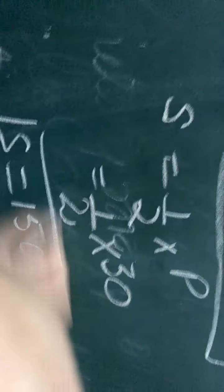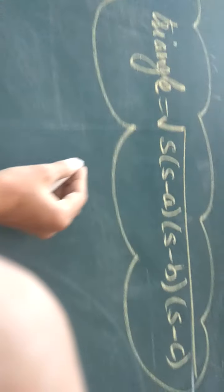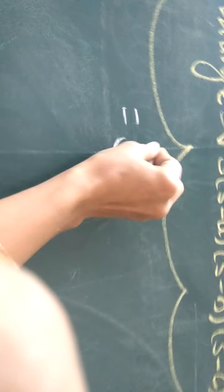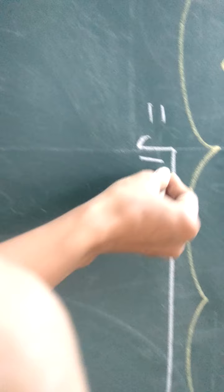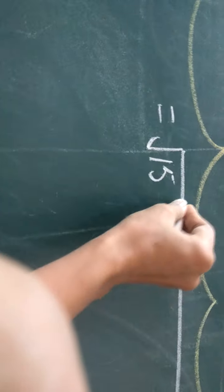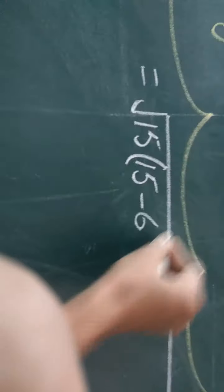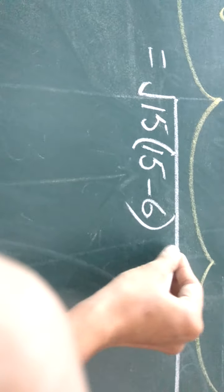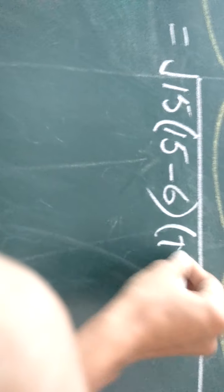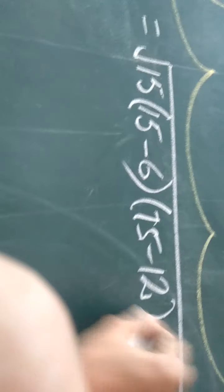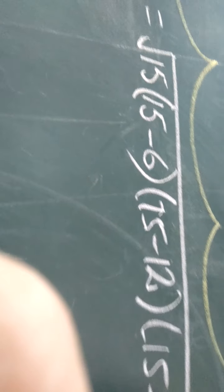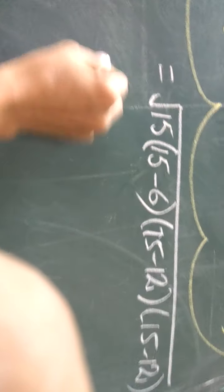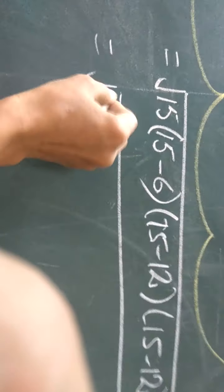So in this way you will get the semi-perimeter. Now let us quickly put the values in the given formula. Dear students, you must write the formula in every question. So S is 15, 15 minus A - the side which we found is 6 - into 15 minus 12 into 15 minus 12. So let us solve it.